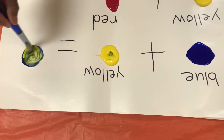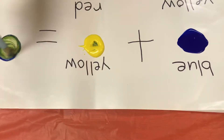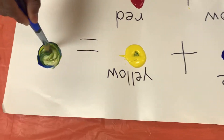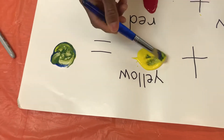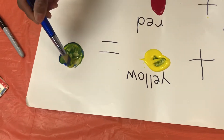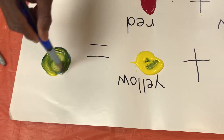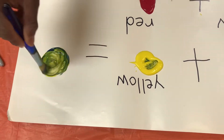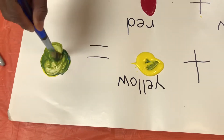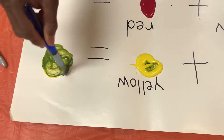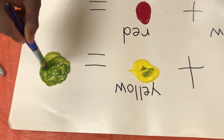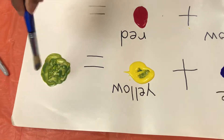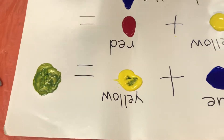You put some of each color, some blue and some yellow, and you mix it up, and we're going to see what color we make. What color, friends? What color are you starting to see? Green. Yes.